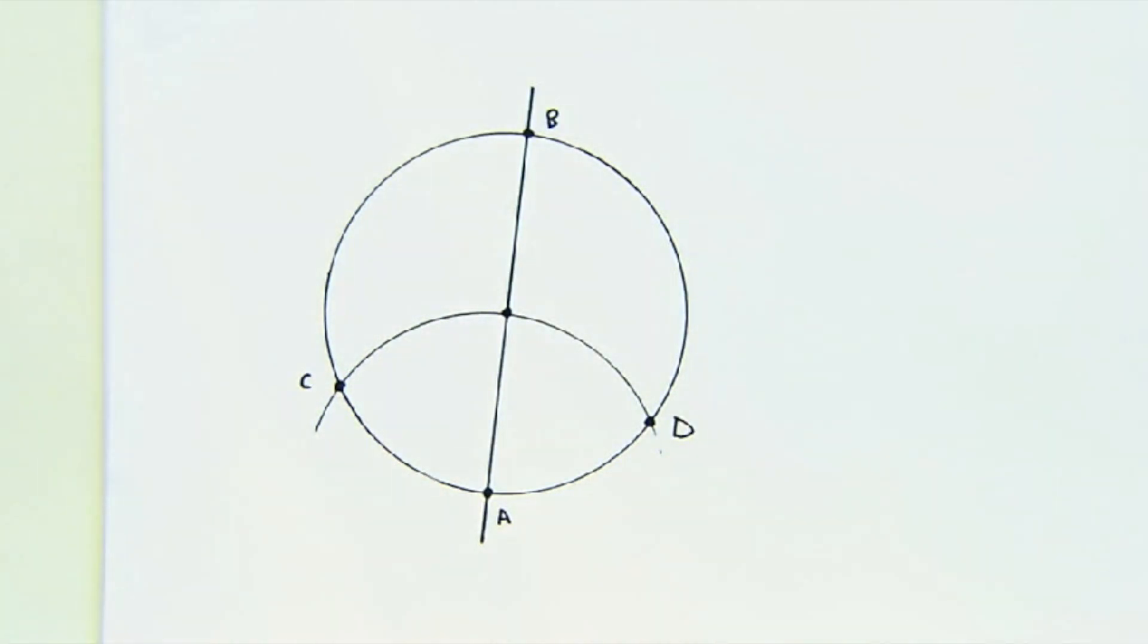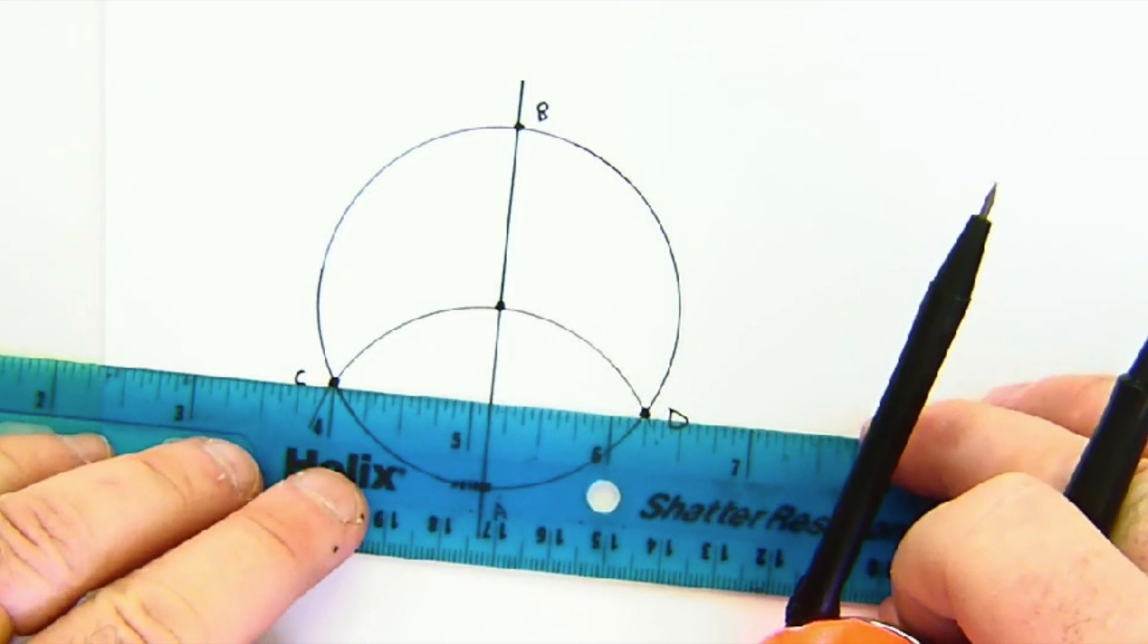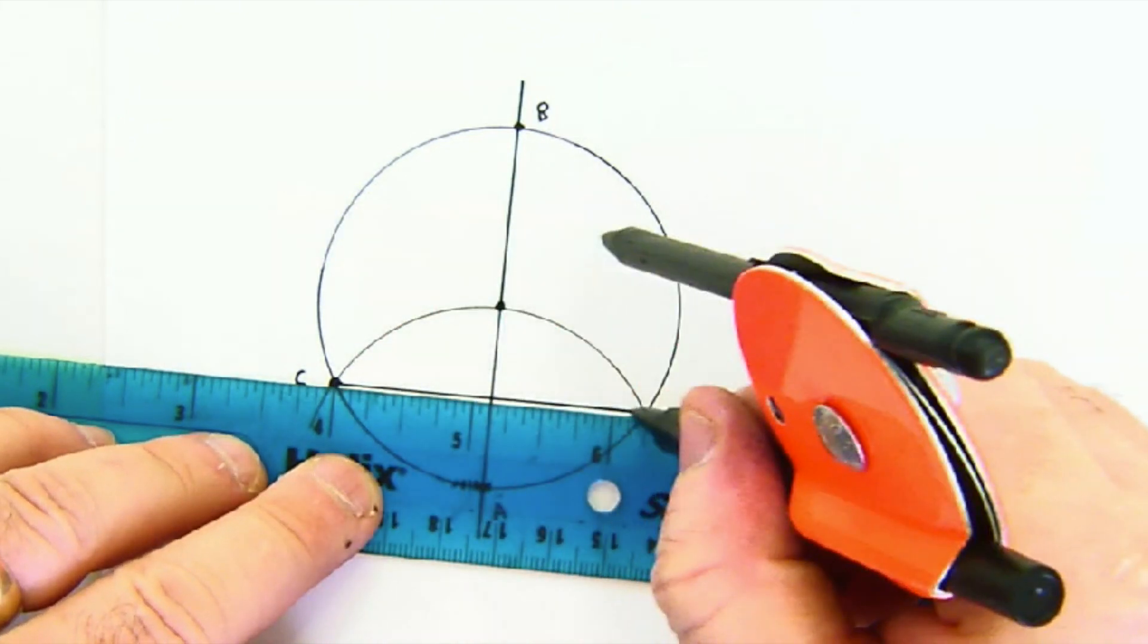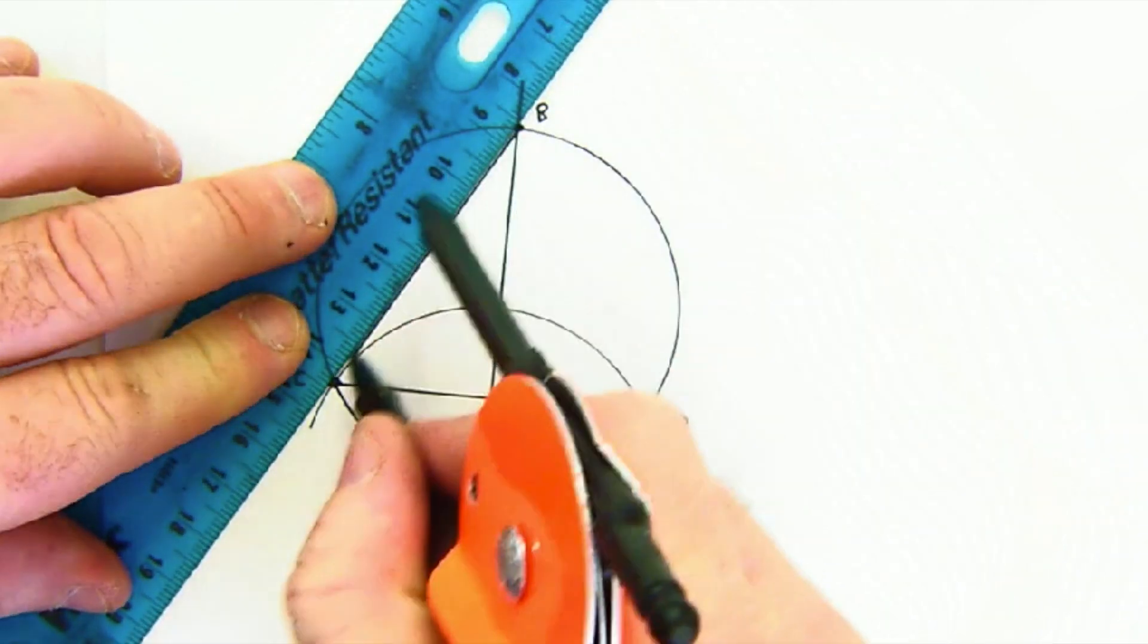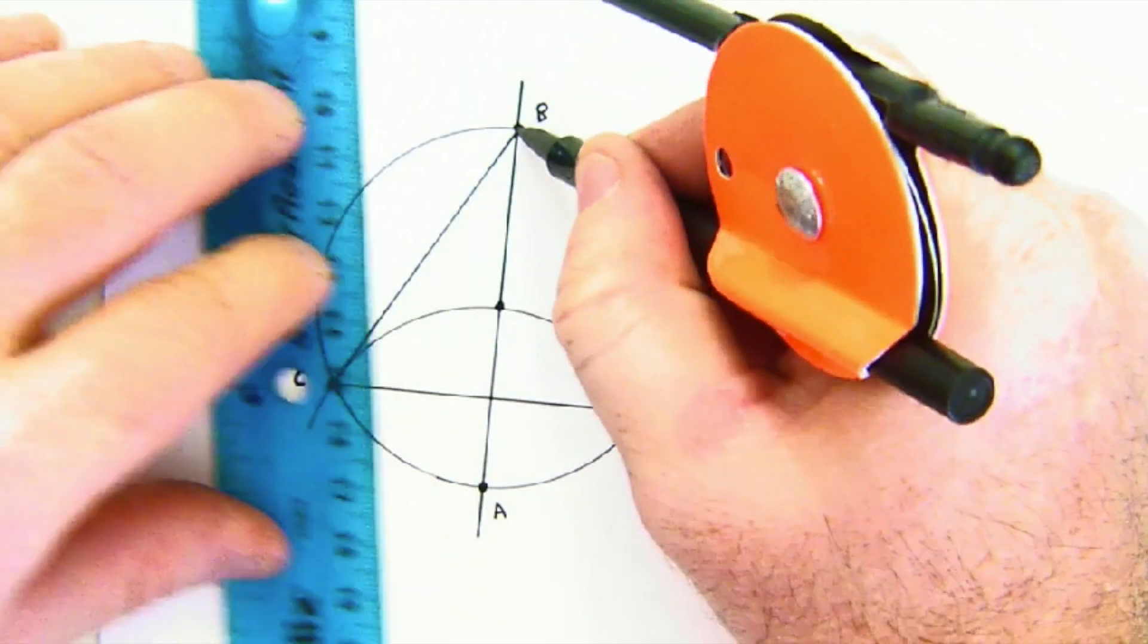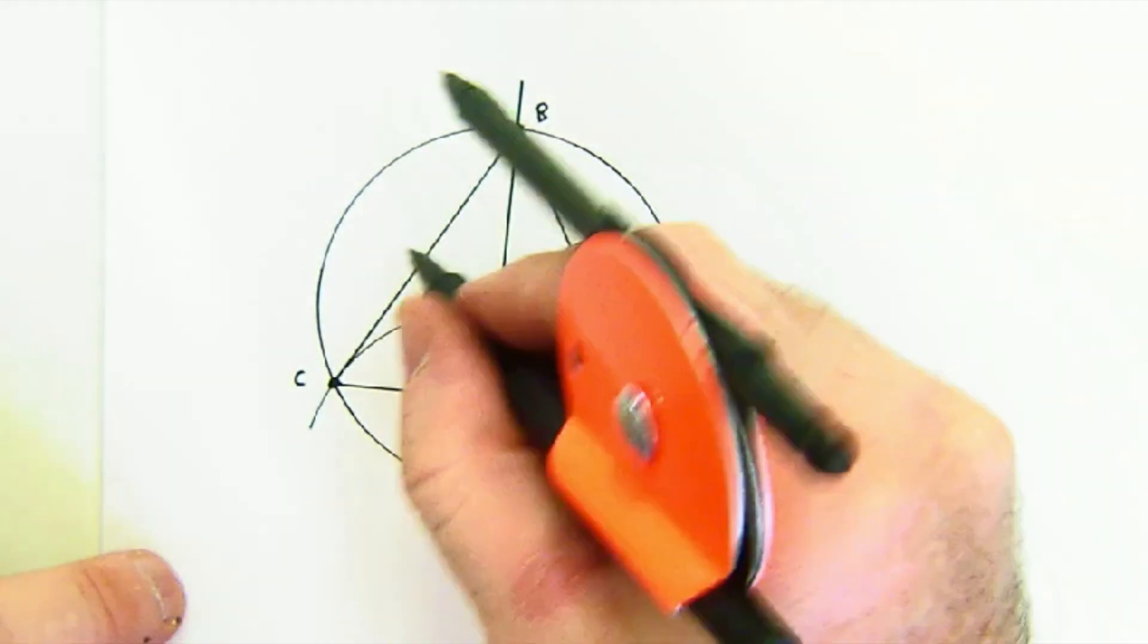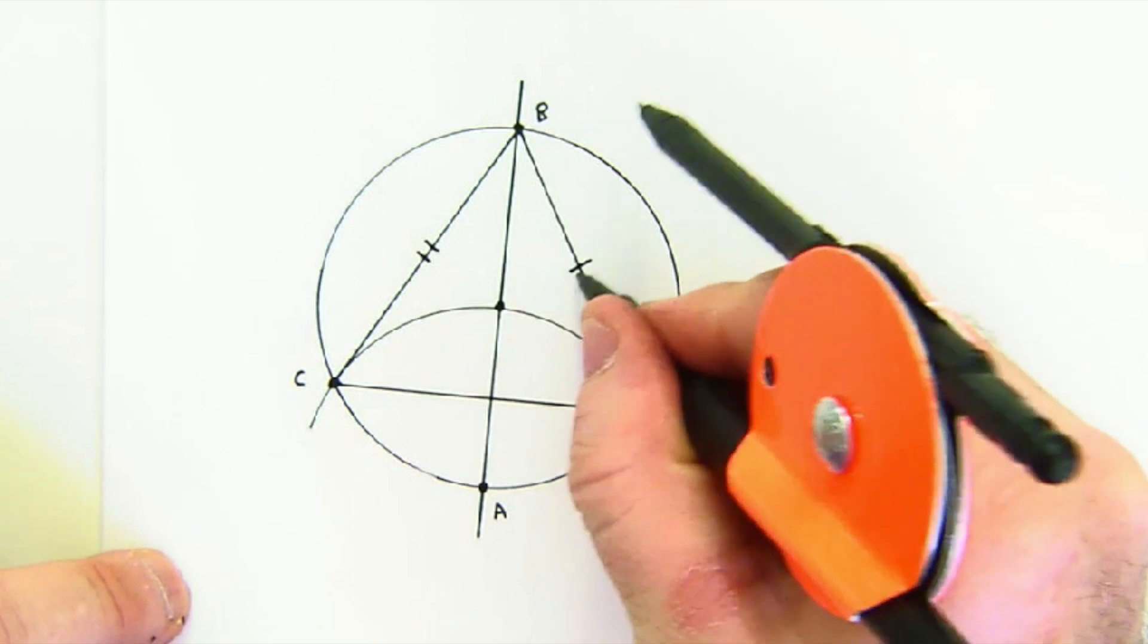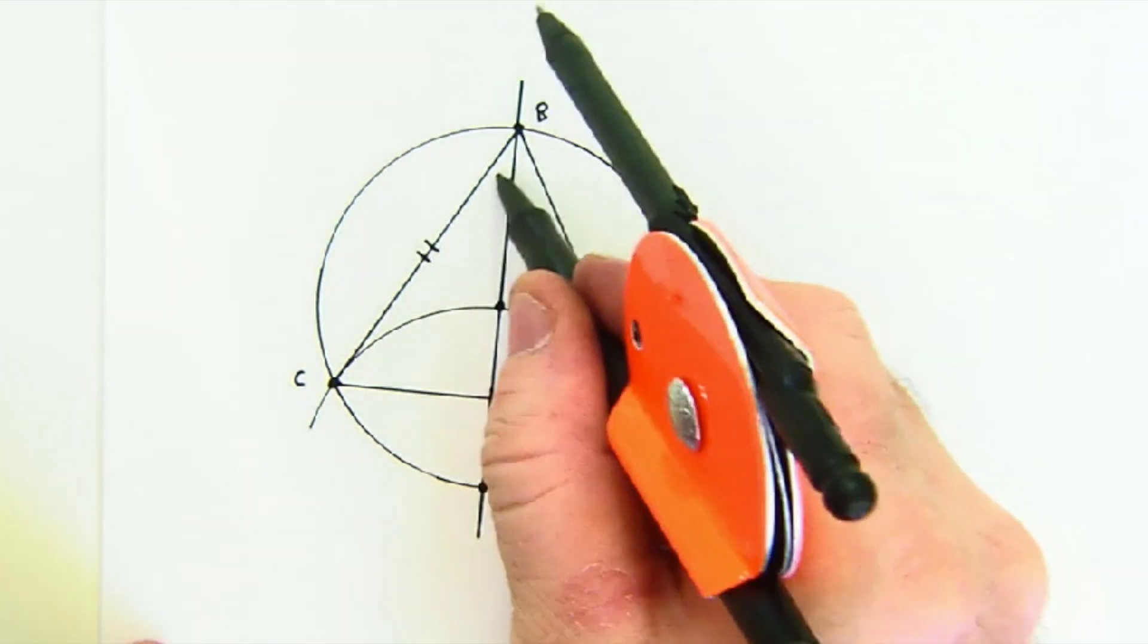Now, like magic, if I connect C-D, B-C, and B-D, I create that most beautiful equilateral triangle. There it is.